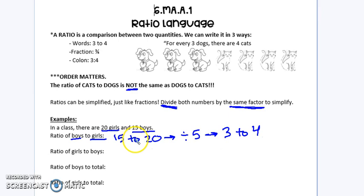So my ratio of boys to girls is 3 to 4. For every 3 boys, there are 4 girls.